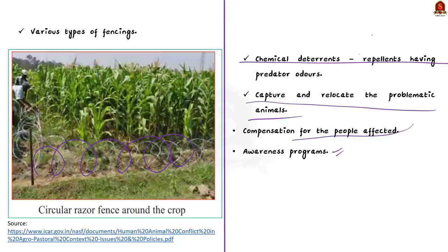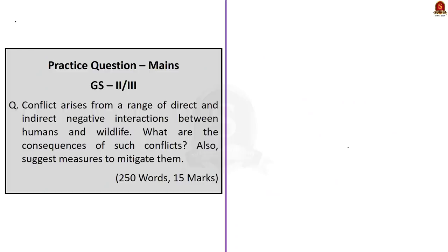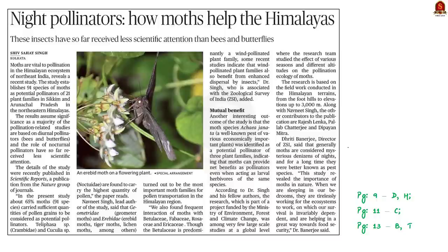In this news article discussion we saw what human-wildlife conflict is, reasons for it, its consequences, and recommendations to enable human-wildlife coexistence. Now let us move on to the next news article discussion.